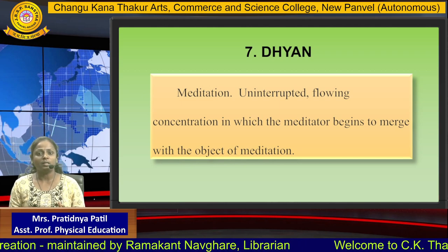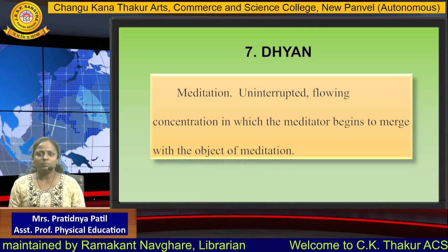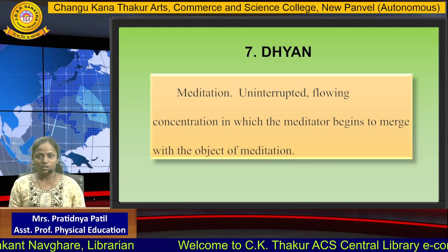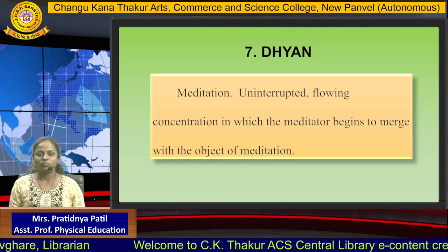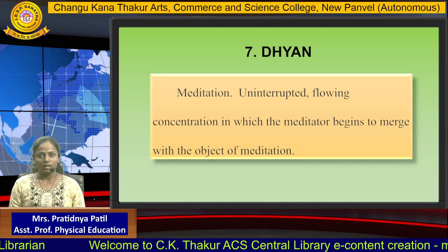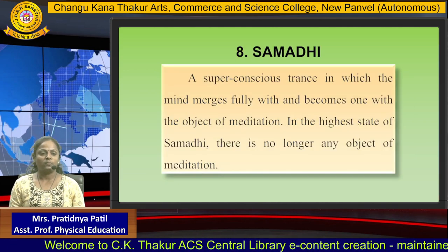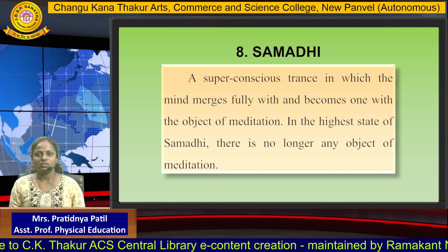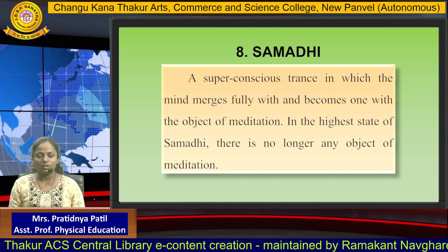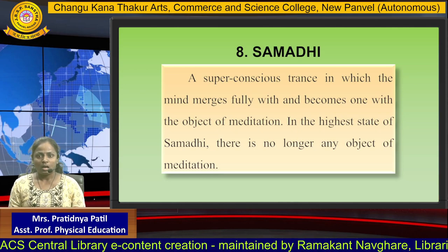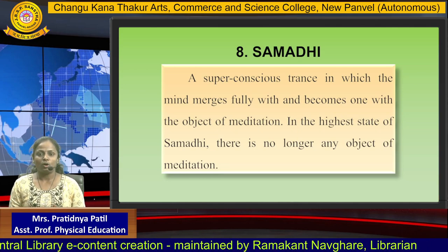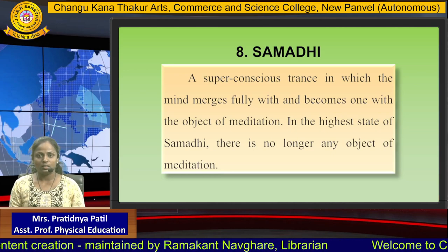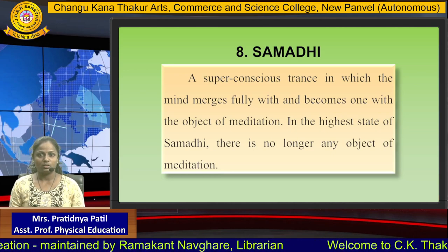The seventh step of Ashtanga Yoga is Dhyana, which means meditation — uninterrupted flowing concentration in which the meditator begins to merge with the object of meditation. The eighth step of Ashtanga Yoga is Samadhi — a super-conscious trance in which the mind merges fully with and becomes one with the object of meditation. In the highest state of Samadhi, there is no longer any object of meditation.